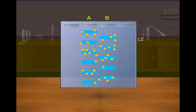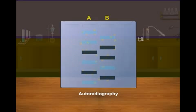The hybridized DNA fragments are detected by using autoradiography. Radioactivity from the probes produces dark bands that correspond to the position of VNTRs.